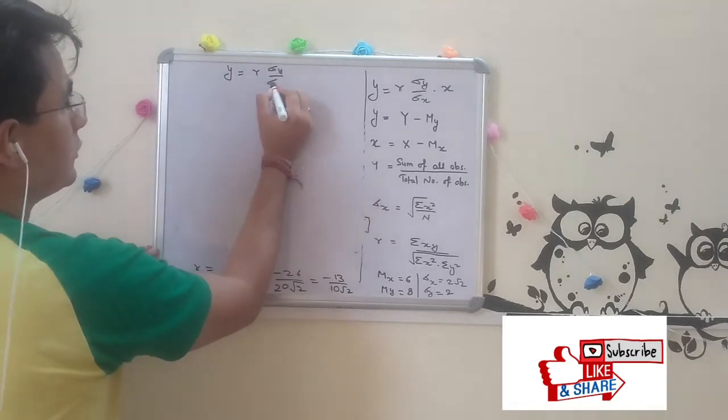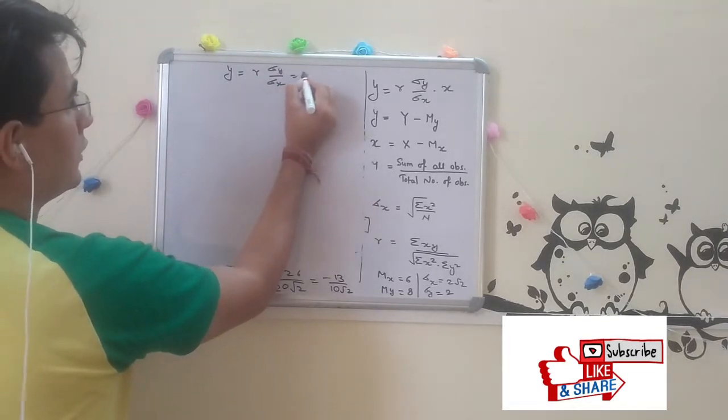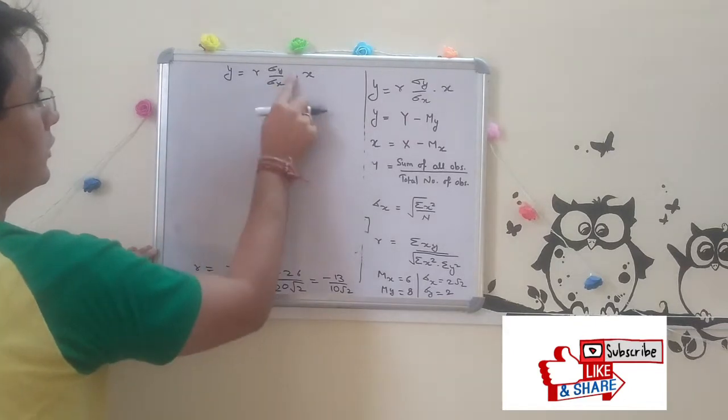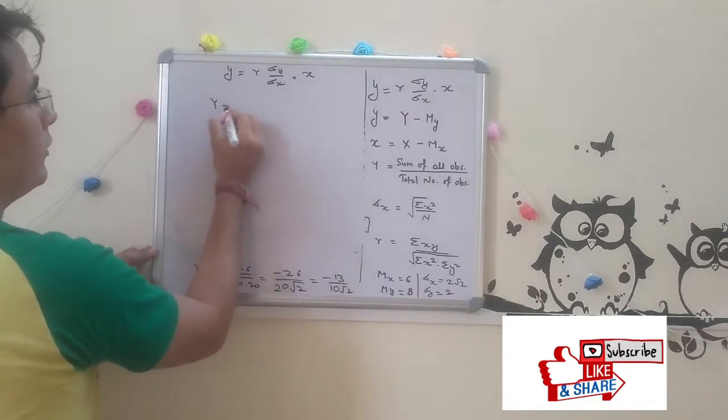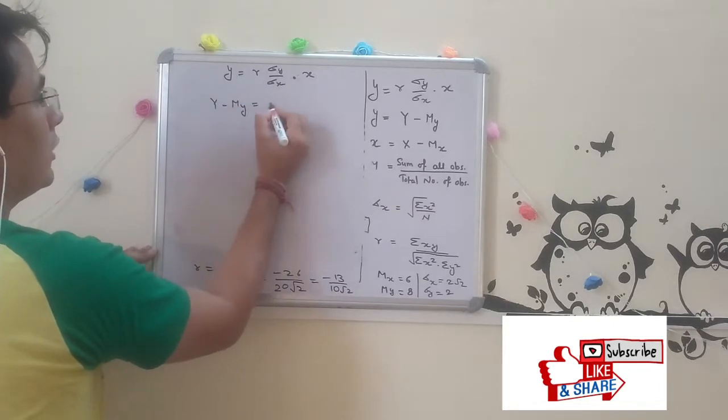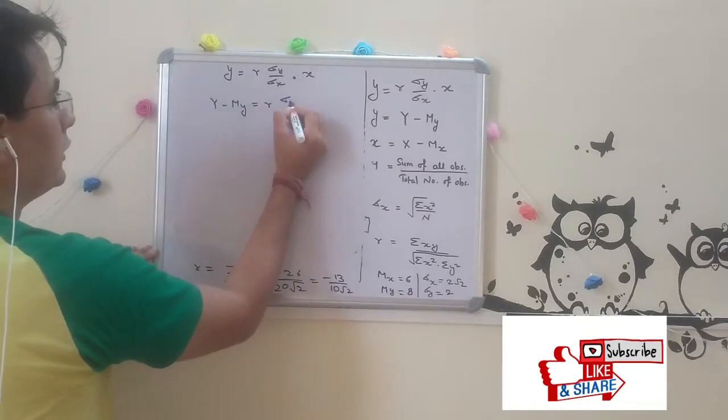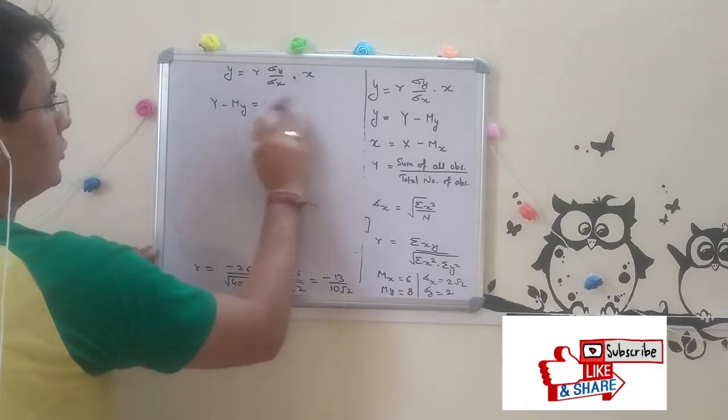Our equation is y = R * (standard deviation of y / standard deviation of x) * x. What is small y? Capital Y minus mean of Y.